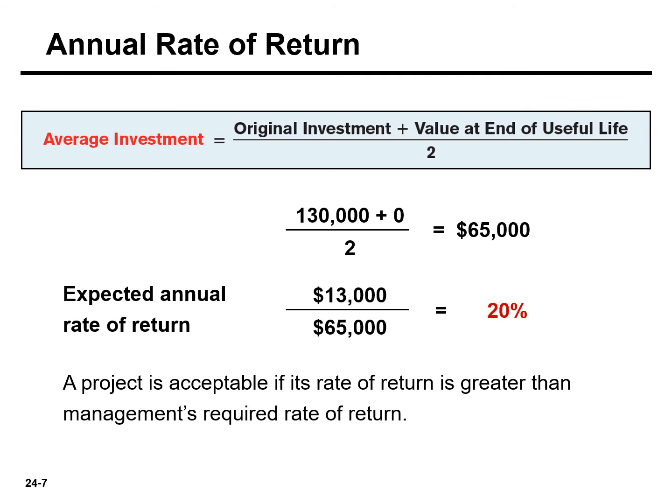Management then compares the annual rate of return with its required rate of return for investments of similar risk. The required rate of return is generally based on the company's cost of capital. The decision rule is: a project is acceptable if its rate of return is greater than management's required rate of return. It is unacceptable when the reverse is true.